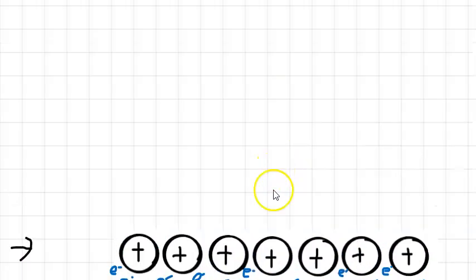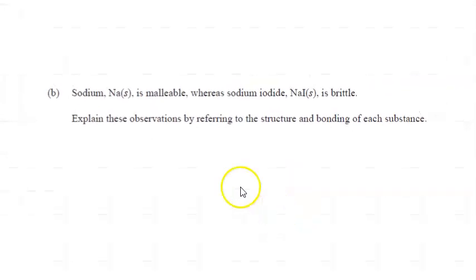We'll have a look at a past exam question that goes over this. So this is from last year's exam. Sodium is malleable, whereas sodium iodide is not. You can have a look at the ionic compound video to find out about how you would explain sodium iodide.